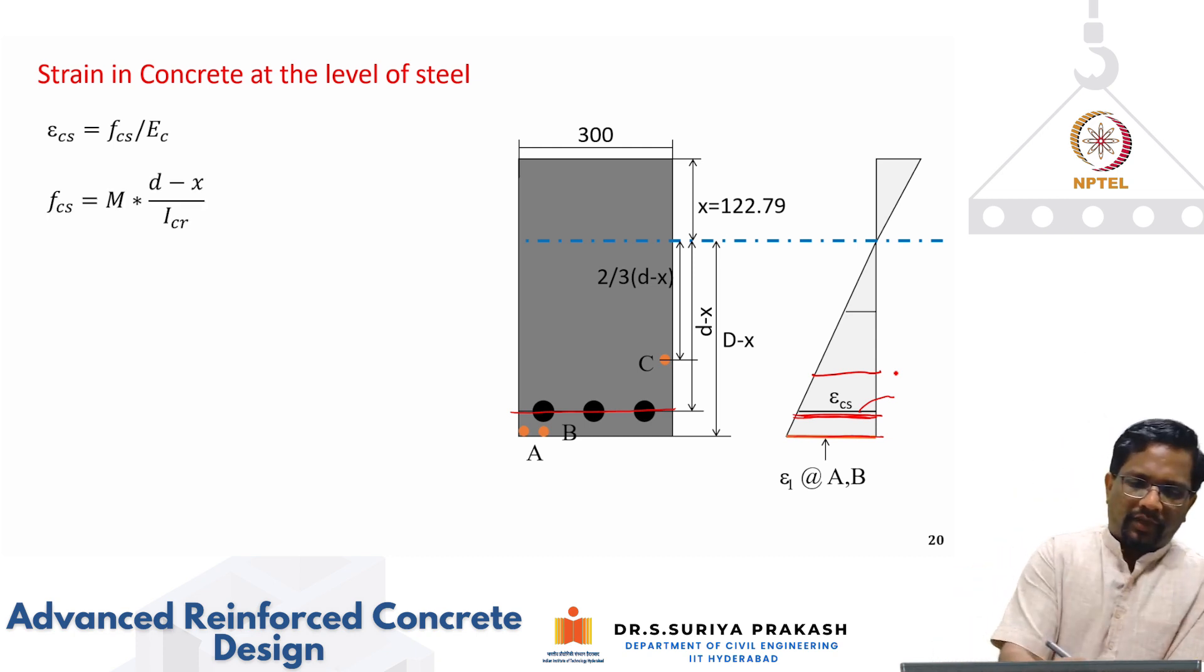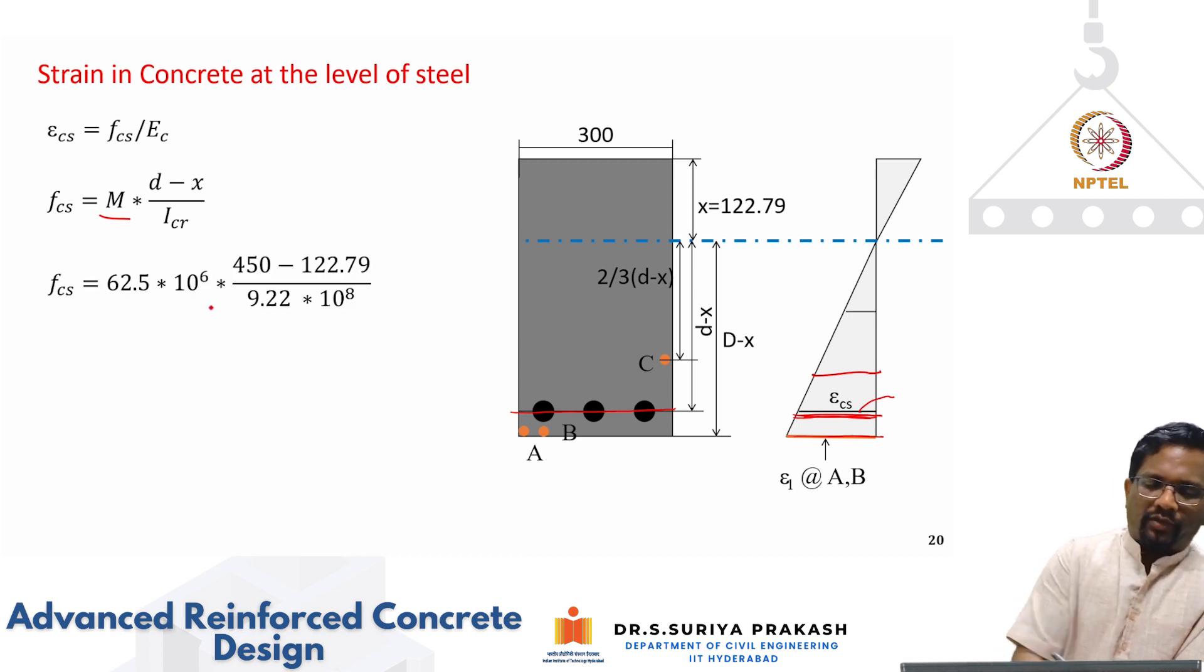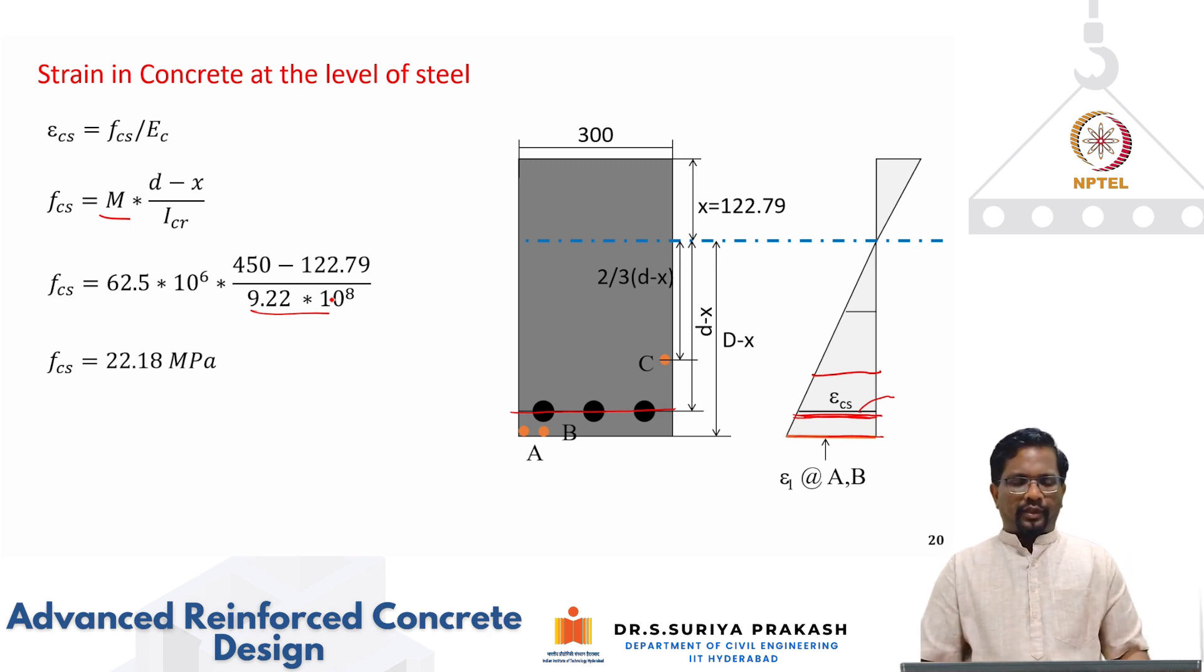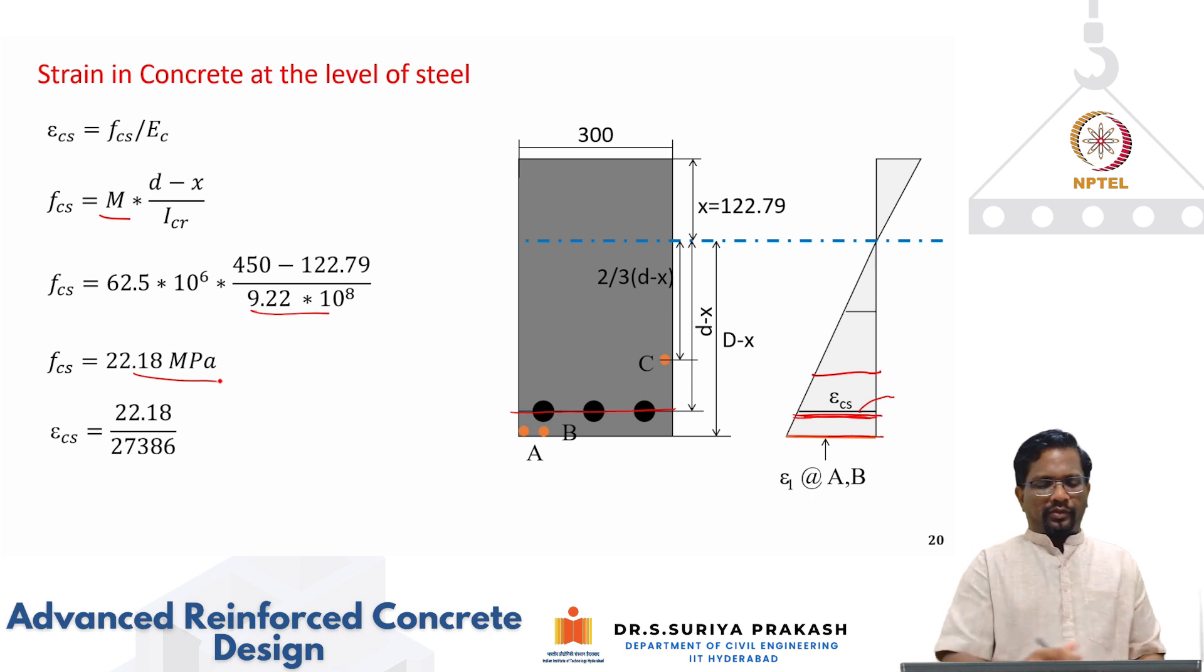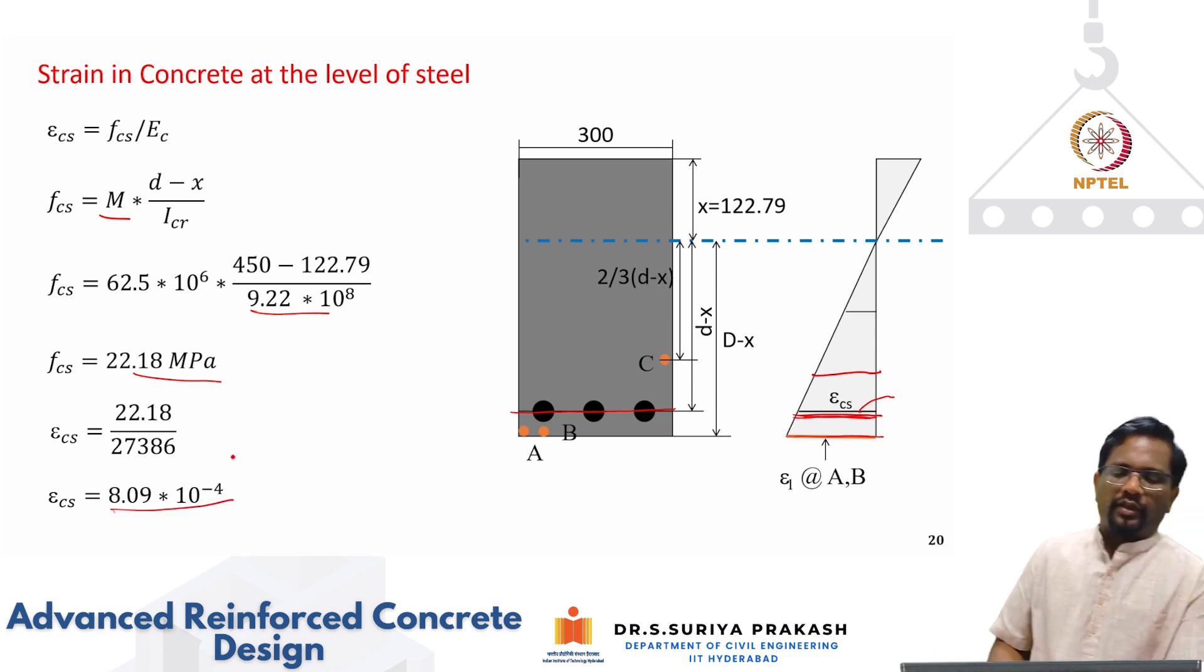We are doing linear elastic analysis. FCS is nothing but moment divided by distance divided by cracked moment of inertia. If you substitute the FCS is working out to be moment is 62.5 into 10 to the power of 6 Newton millimeter. D is 450. X is 122.79. And divided by cracked moment of inertia, you get stress in the concrete as 22.18 megapascal. And your epsilon CS, for this stress, concrete may not be elastic, but we are assuming that it is going to be nearly elastic. You divide by the elastic modulus to get the strain in the concrete at the level of steel, which works out to be 8.09 into 10 to the power of minus 4 strain. This is epsilon CS.